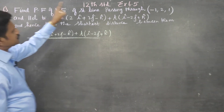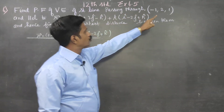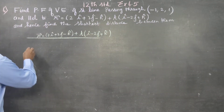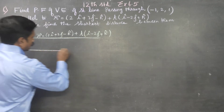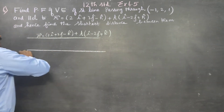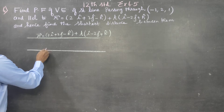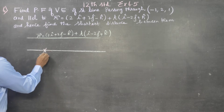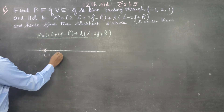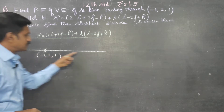I want another straight line passing through and parallel to. I want the equation of the white colour line. It passes through the point minus 1, 2, 1.